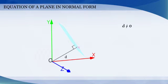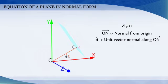If vector ON is the normal from the origin to the plane and n cap is the unit vector normal along ON vector, then vector ON is equal to d into n cap.